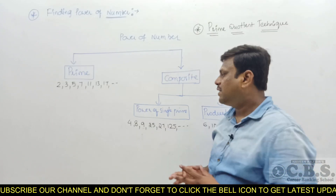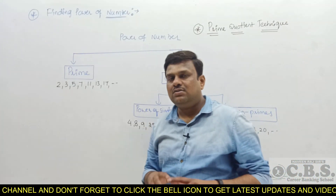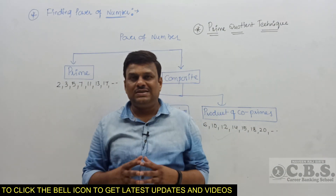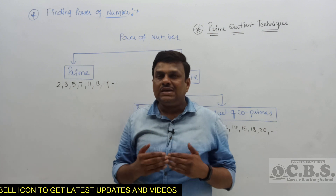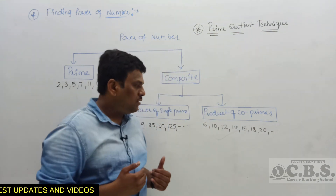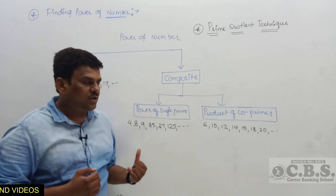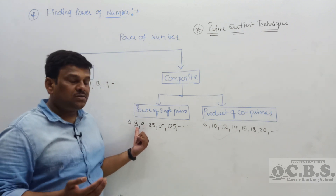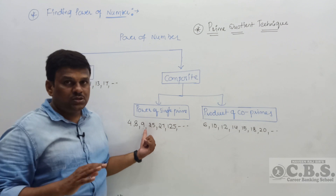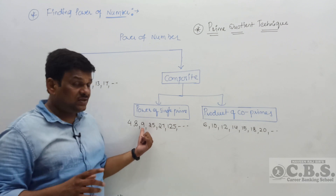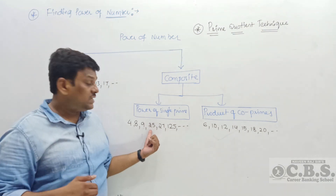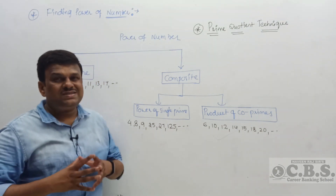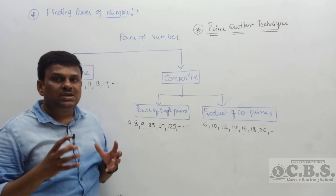The second category is called composite. Composite numbers are further split into two types. The first type is when the composite number can be expressed as a single power of a prime. For example: 4 = 2², 8 = 2³, 9 = 3², 25 = 5², 27 = 3³, and 125 = 5³. So the composite number is simply expressed as a single prime raised to a power.